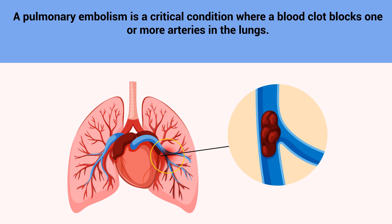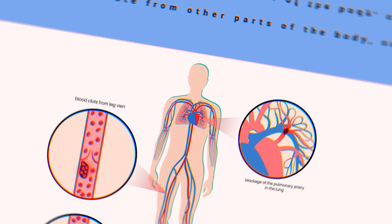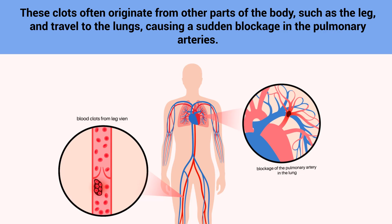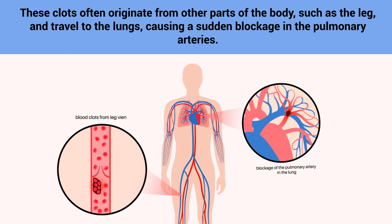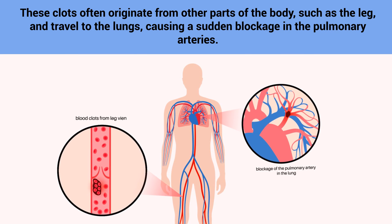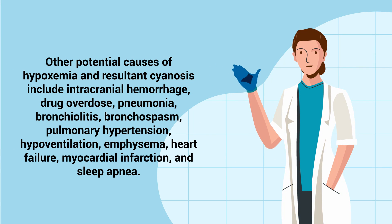A pulmonary embolism is a critical condition where a blood clot blocks one or more arteries in the lungs. These clots often originate from other parts of the body, such as the leg, and travel to the lungs, causing a sudden blockage in the pulmonary arteries. Other potential causes of hypoxemia that can result in cyanosis include intracranial hemorrhage and drug overdose.